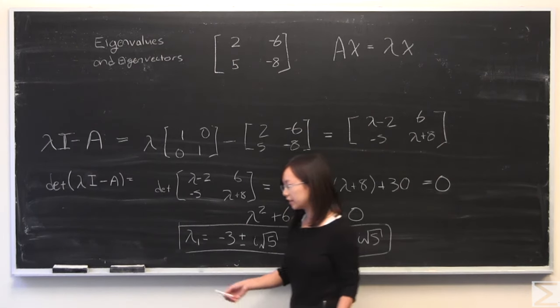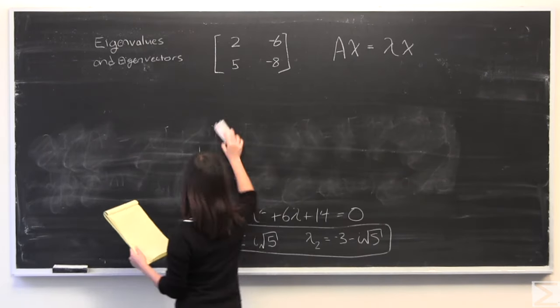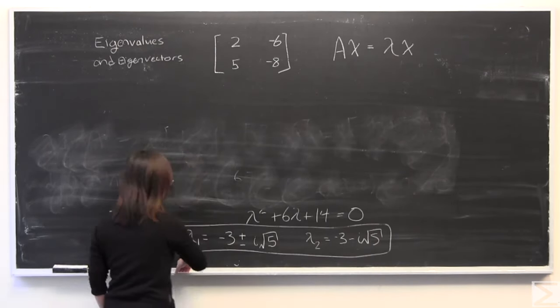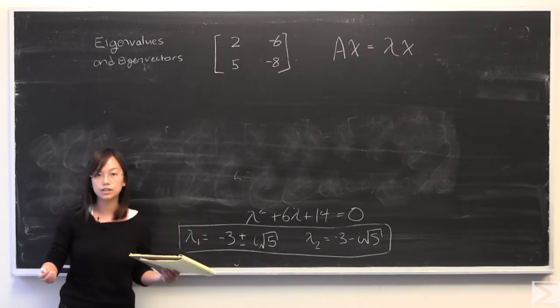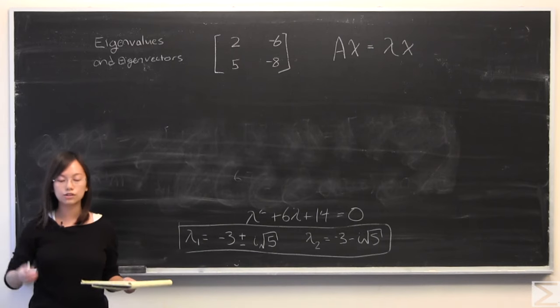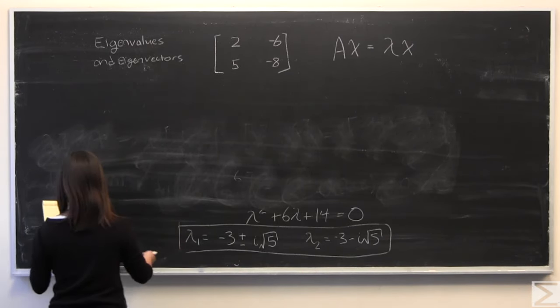So to find the eigenvectors, we would have to plug them back in. For the sake of time, I'm going to do this process for lambda 1 only. The process for lambda 2 is of course in the solution transcript, and it also follows a very similar process. So if you can do one, you can definitely do the other.